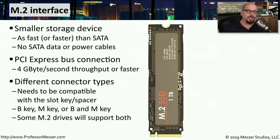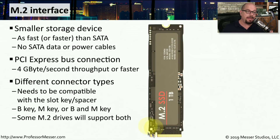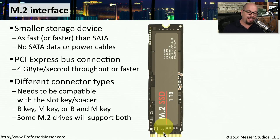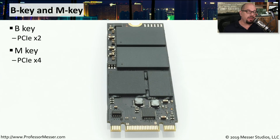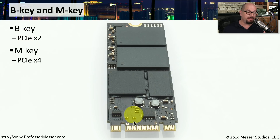One thing you'll notice with an M.2 drive is that there is a particular key at the bottom of the drive when it's plugging into the interface on the motherboard. This spacer could be what's called a B key or an M key, or the drive may support both. You need to check the specifications of the device you're plugging into to make sure the key on your M.2 drive is compatible. If your drive connects to a device that supports a B key, you'll be able to use a maximum of two lanes of the PCI Express bus. If your M.2 drive is an M key connecting to a device that supports the M key, you can use a maximum of four lanes of the PCI Express bus.